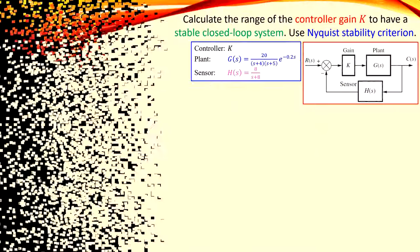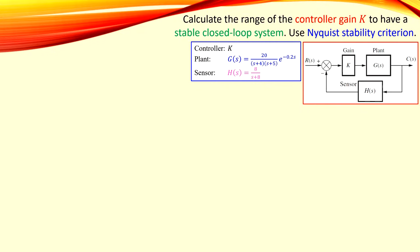In this example, we have a control system with a gain K as our controller, a plant G, and a sensor in the feedback loop. The controller is K, the plant is given as a second-order system with a time delay of 0.2 seconds, and the sensor is a first-order system. The question is: calculate the range of the controller gain to have a stable closed-loop system using the Nyquist stability criterion.